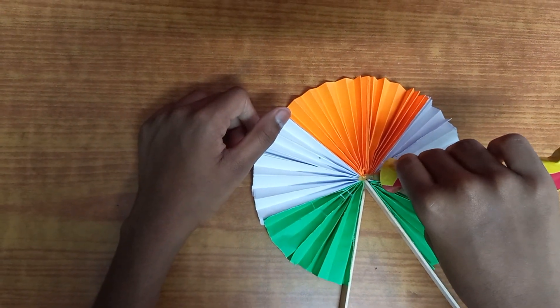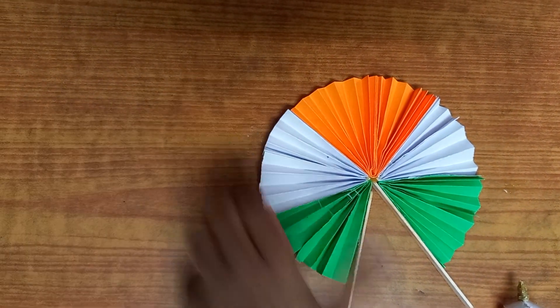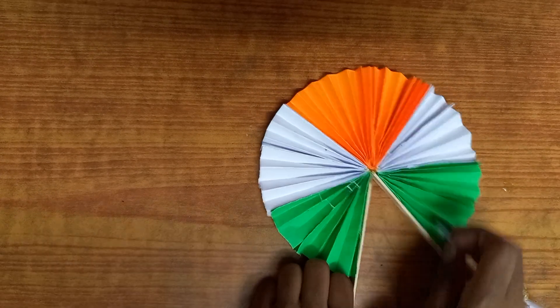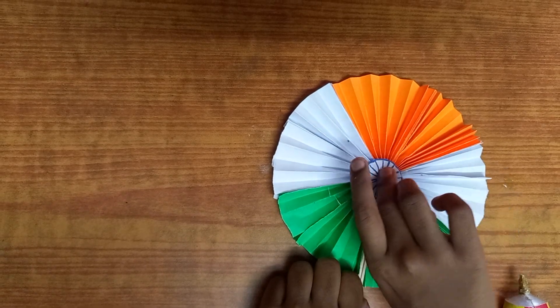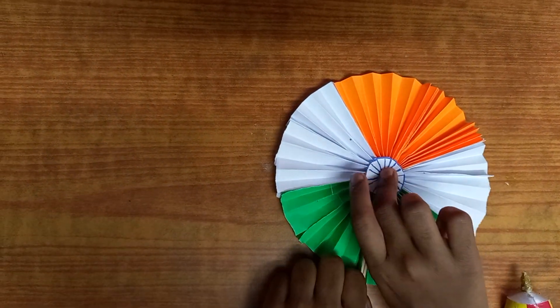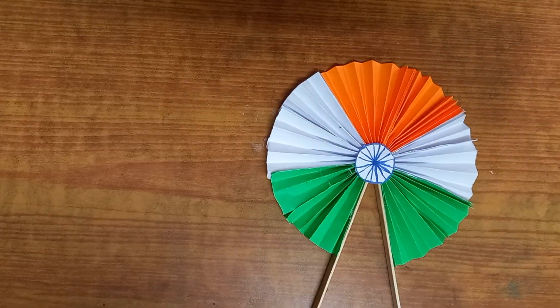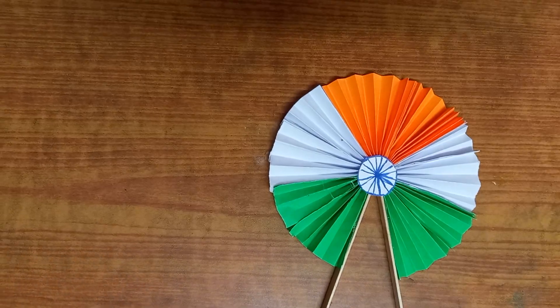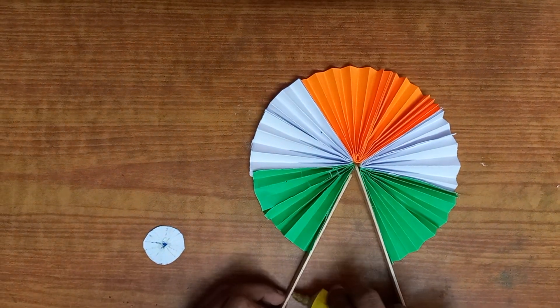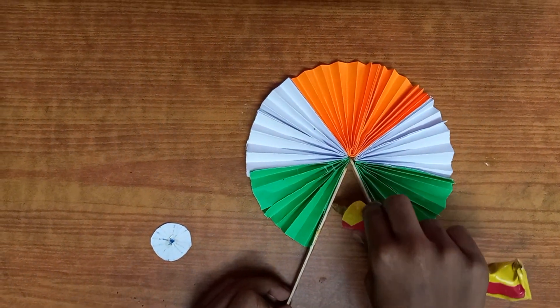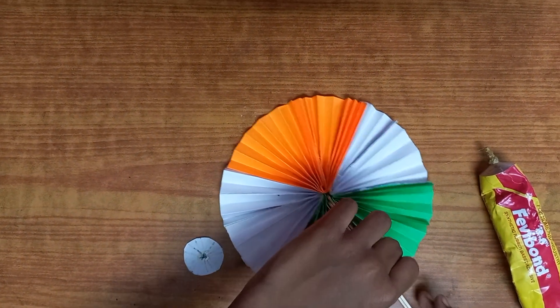Now let's make it into an Indian flag by applying a little glue. Hold these two sticks together and paste this chakra in the middle.